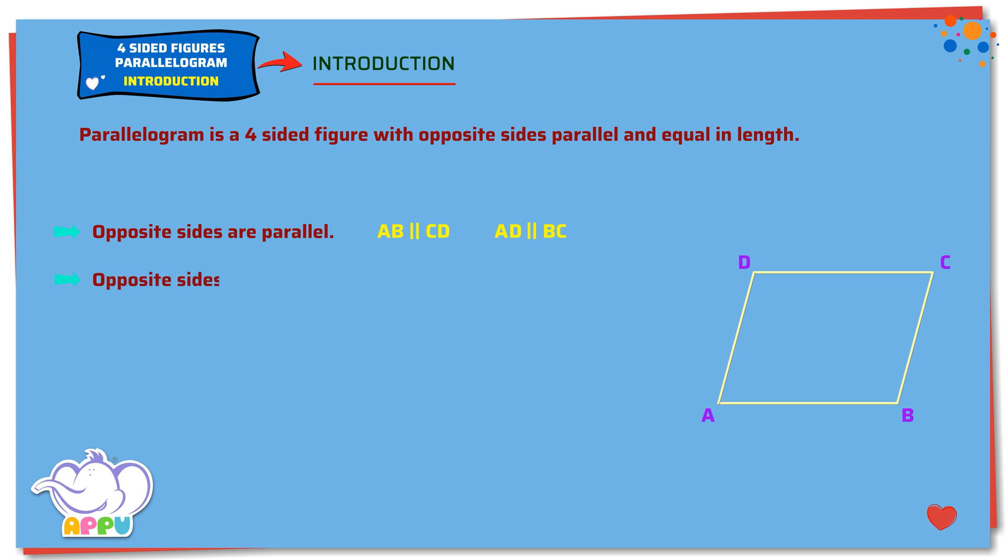Opposite sides are equal in length. Here length of AB equals length of CD. Length of AD equals length of BC.